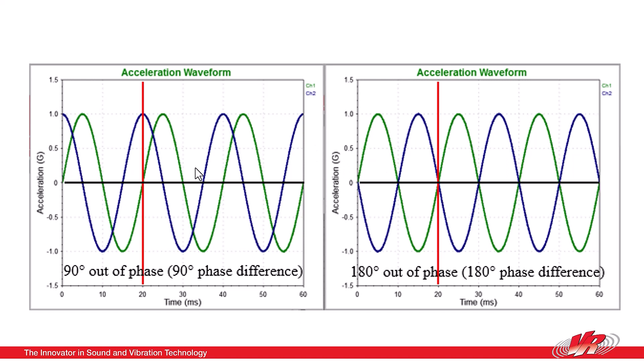In this example on the left, if we took a look at this green sine wave, right here it's at its peak. At the very moment, the blue wave is at its equilibrium position. We would say about those two waves that they are out of phase. In fact, we would say they're 90 degrees out of phase.